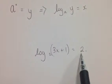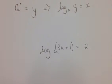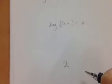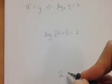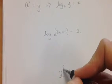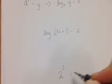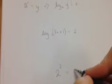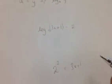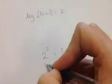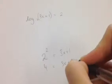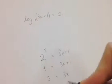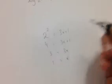In this situation the missing power is 2. So taking it out of log format: 2 is my base number, my missing power is 2, and that equals 3x plus 1. So 4 is equal to 3x plus 1, which gives 3x is equal to 3, so x is equal to 1. I could check that by substituting back in.